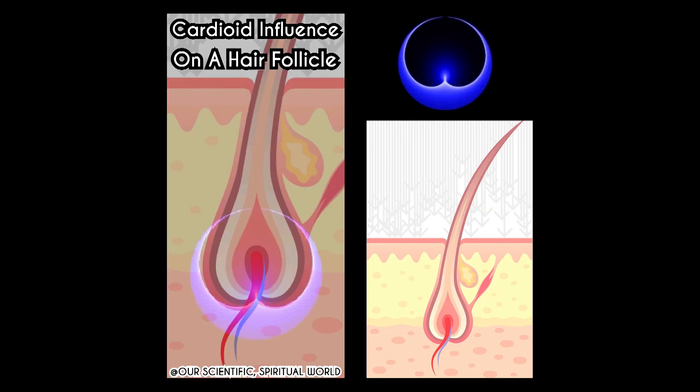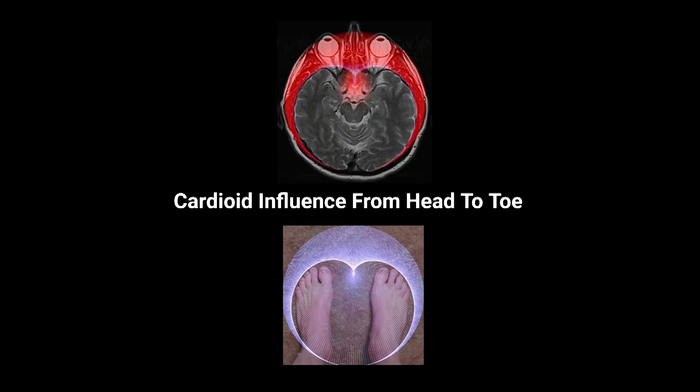We can see it going all the way down to the base of the hair follicle. Now let's go completely from head to toe — the feet are more of a subtle influence, but if you take into account the curves from the back of the heels together, the outline of the feet is basically the same shape as the brain and the brain stem as well.